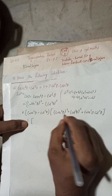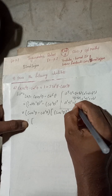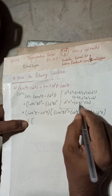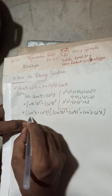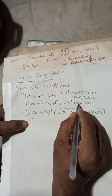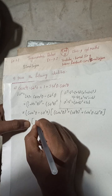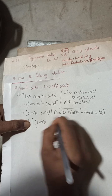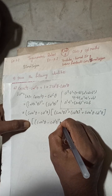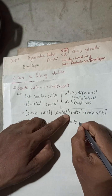Now for the a² plus b² part, we will use the formula: a² plus b² equals (a minus b)² plus 2ab. Since cosec²θ minus cot²θ gives 1, we apply the minus formula. So a² plus b² becomes: (cosec²θ minus cot²θ)² plus 2 times cosec²θ times cot²θ.